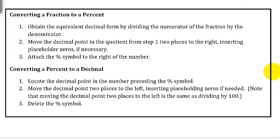In this box, it talks about converting a fraction to a percent. First, we want to obtain the equivalent decimal form by dividing the numerator of the fraction by the denominator. Then move the decimal point in the quotient from step 1 two places to the right, insert placeholder zeros if necessary, and attach the percent symbol to the right of the number.